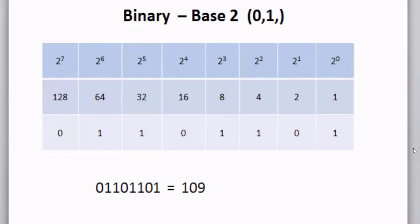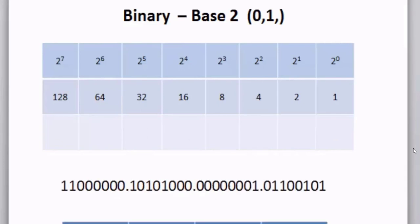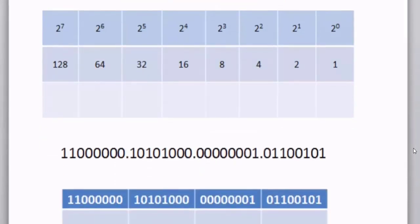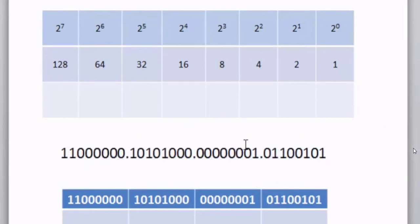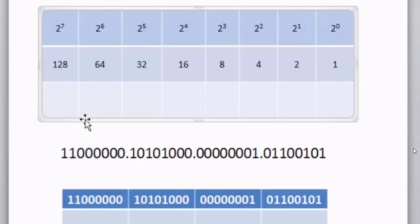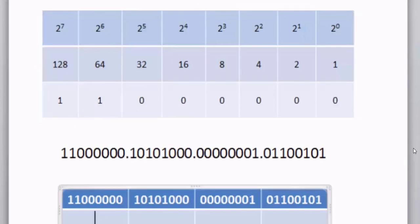Now let's look at a full IP address in binary. In this next slide, I have a 32-bit IP address — 4 octets or 32 bits total. If I want to convert this binary IP address to decimal, all I need to do is count up each individual octet. Let's start with the first one: 1, 1, 0, 0, 0, 0, 0, 0 — 128 plus 64 is 192.